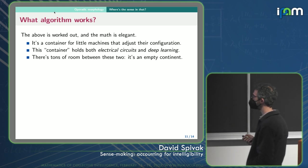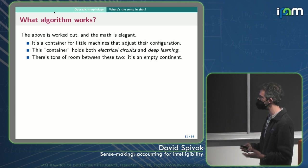And so I think the math is, I claim the math is elegant. And it's a container, it's a kind of accounting system for little machines that adjust their configuration. And it holds both electrical circuits. So you can account for electrical circuits and transistors and how you build up CPUs from those. And it can account for deep learning, the kind of training of a deep neural network fits right in there.